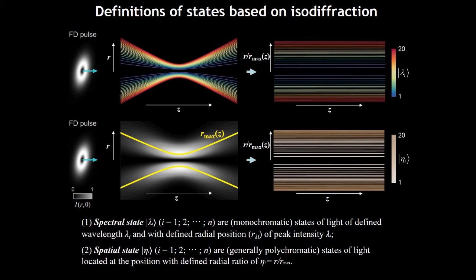So that we can define two classical states to describe the interesting isodiffraction effect. The first one is the spectral state, lambda I state. That means the monochromatic component state of light with defined wavelength lambda I and with defined radial position of the peak intensity.